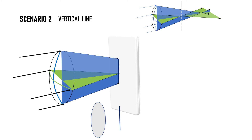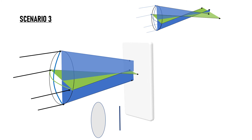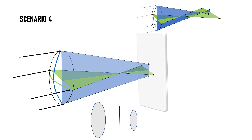In Scenario 3, the horizontal beam has converged and begun to diverge, while the vertical beam is still converging. The image is again a vertically oval image, but smaller than in Scenario 1 because the beam is narrower. In Scenario 4, moving the screen further, the horizontal beam is diverging and the vertical beam is converging until the size of each beam is equal, producing a circular image. This circle is known as the circle of least confusion, and we will learn why it is so important in optics.